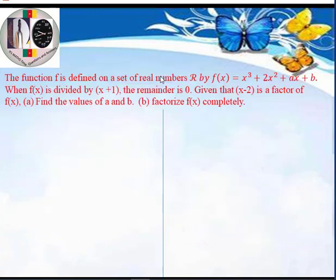In today's question, we are going to talk about functions — that is, polynomial functions. A polynomial is simply an expression that has a consistent sequence of powers in decreasing order. From this polynomial we have x³ + 2x² + ax + b. Such a polynomial is called a cubic equation. If a polynomial has a highest power of 2, we call it a quadratic. And if a polynomial has a power of 4, we call it a quartic polynomial.